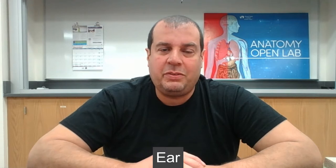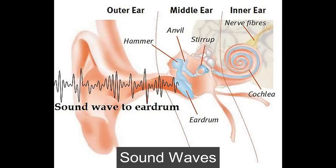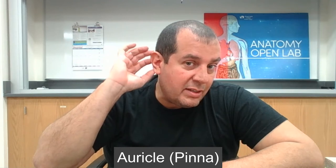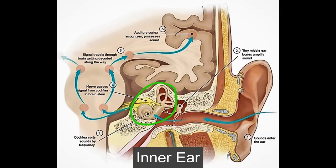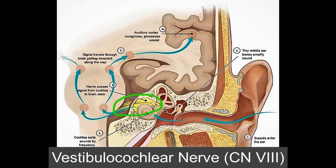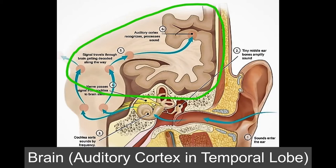Hello everybody, hope everybody's doing fine. What I'm going to go over in this video is one of the special senses: the ear. Like the eye, the ear is another amazing feat of human engineering — how the ear grabs sound waves in the air. These sound waves travel through the air, and the auricle or pinna acts like a funnel. Those sound waves go into your inner ear, which processes the information and sends it to the cochlear nerve, then to the auditory cortex of your temporal lobe, where you hear speech, music, and all kinds of sounds.